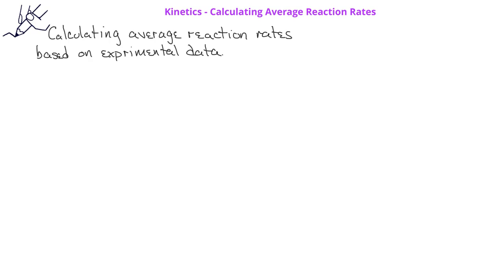In the previous video, we learned how to relate the rates of change of one compound with another compound in a balanced equation. In this video, we want to use that information to help us calculate the average reaction rate based on a data table.